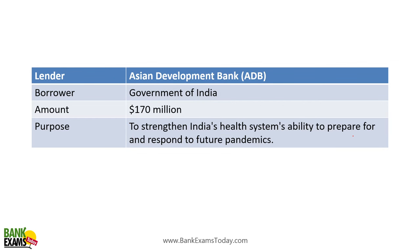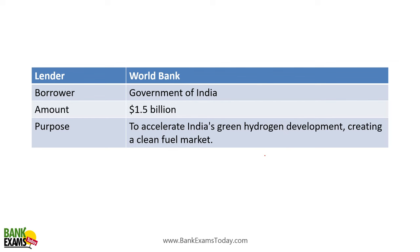Asian Development Bank lent money to Government of India — 170 million dollars to strengthen India's health system's ability to prepare for and respond to future pandemics. World Bank lent 1.5 billion dollars to Government of India to accelerate India's green hydrogen development and create a clean fuel market.